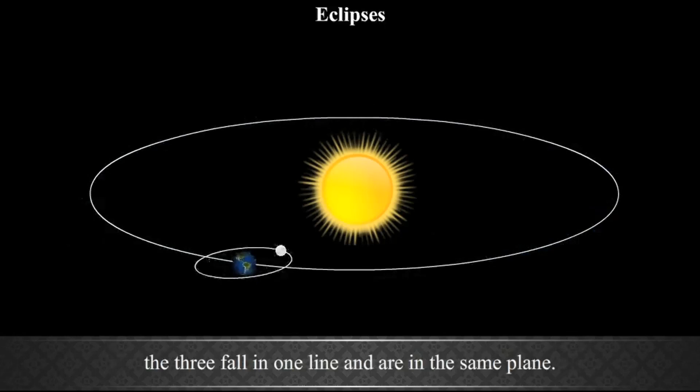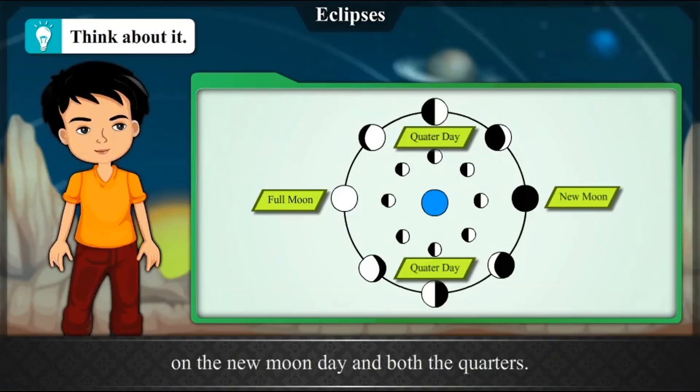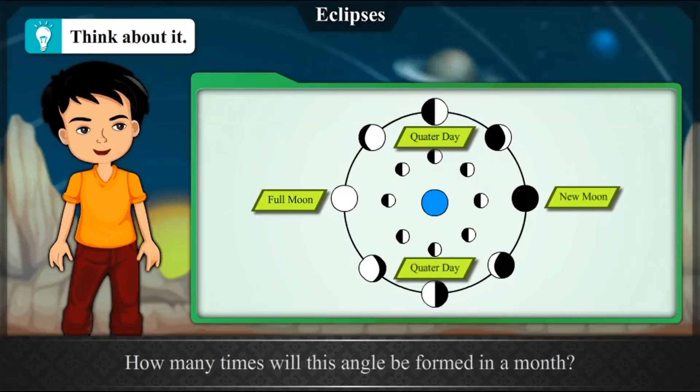Think about it. Consider the relative positions of the Sun, the Moon and the Earth on the new moon day and both the quarters. What will be the angle between the lines joining the Earth and the Moon as well as the Earth and the Sun? How many times will this angle be formed in a month?